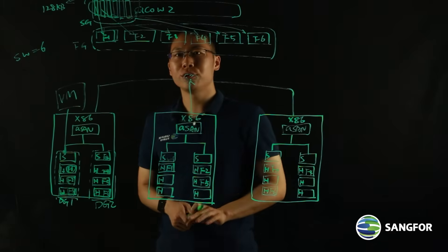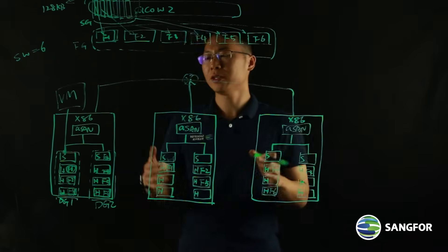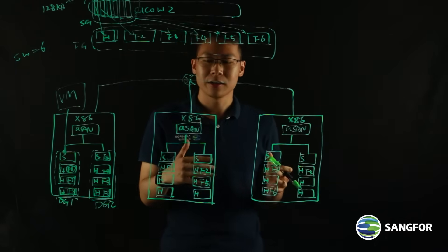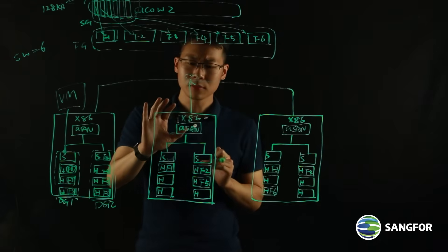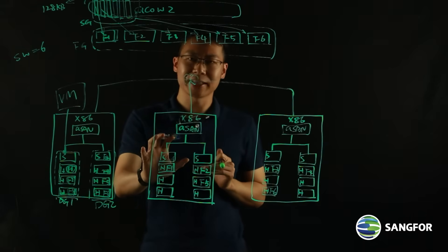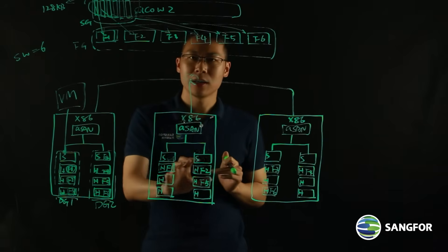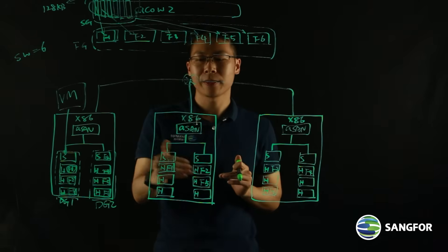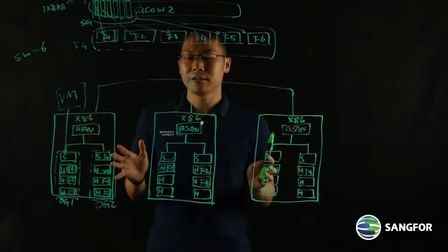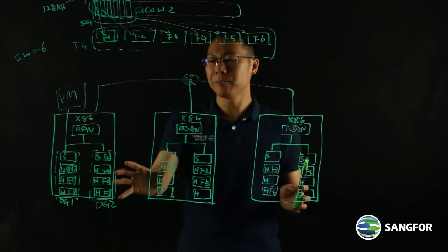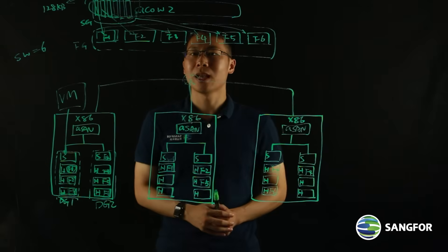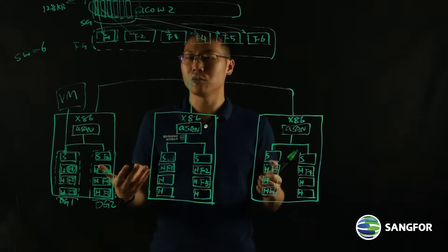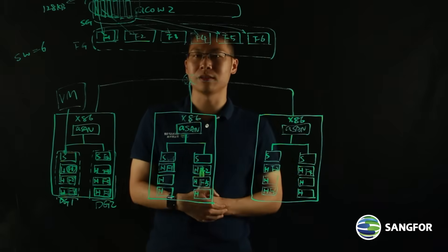One more thing to keep in mind: data striping has been used in our ASAN since version 5.8.6. You need to have at least one SSD for the cache, and inside one disk group there can be no more than seven disks. With data striping, data locality, and our distributed technology with ASAN, our storage performance built by ASAN could rival the world's most advanced HCI systems on the market.